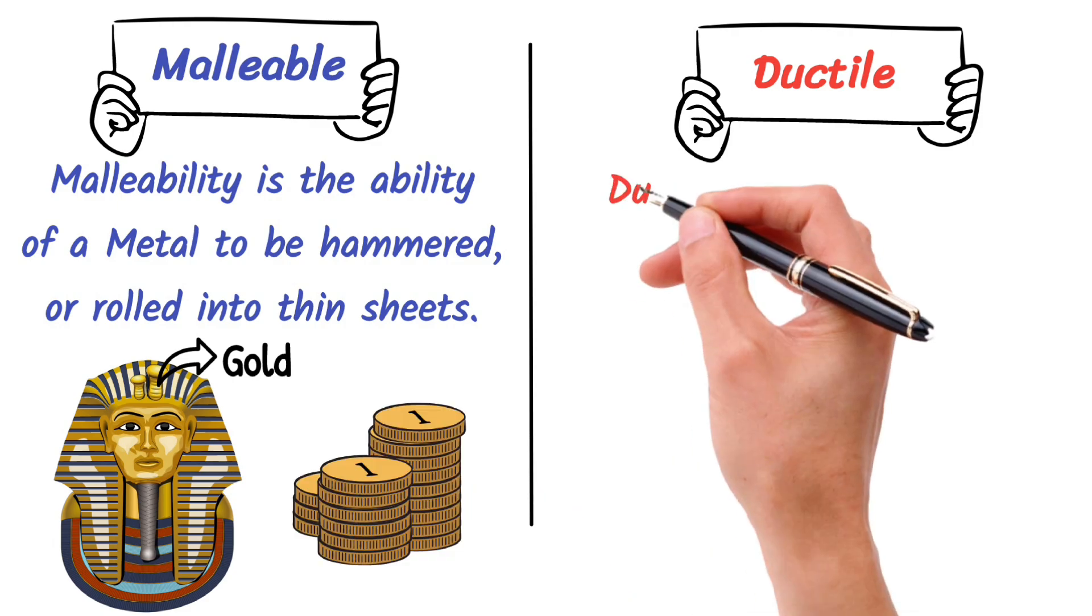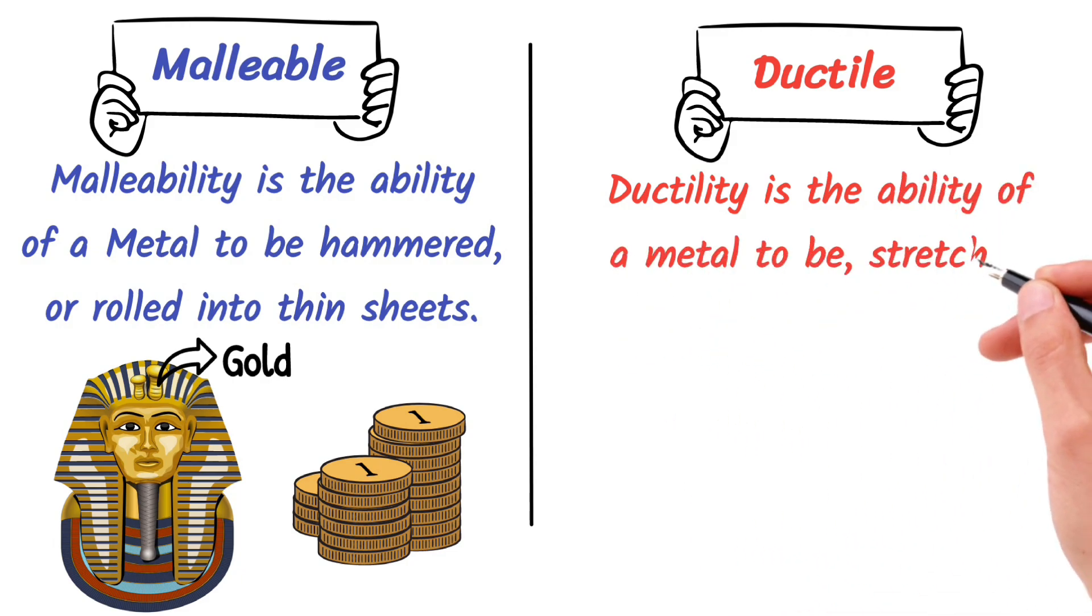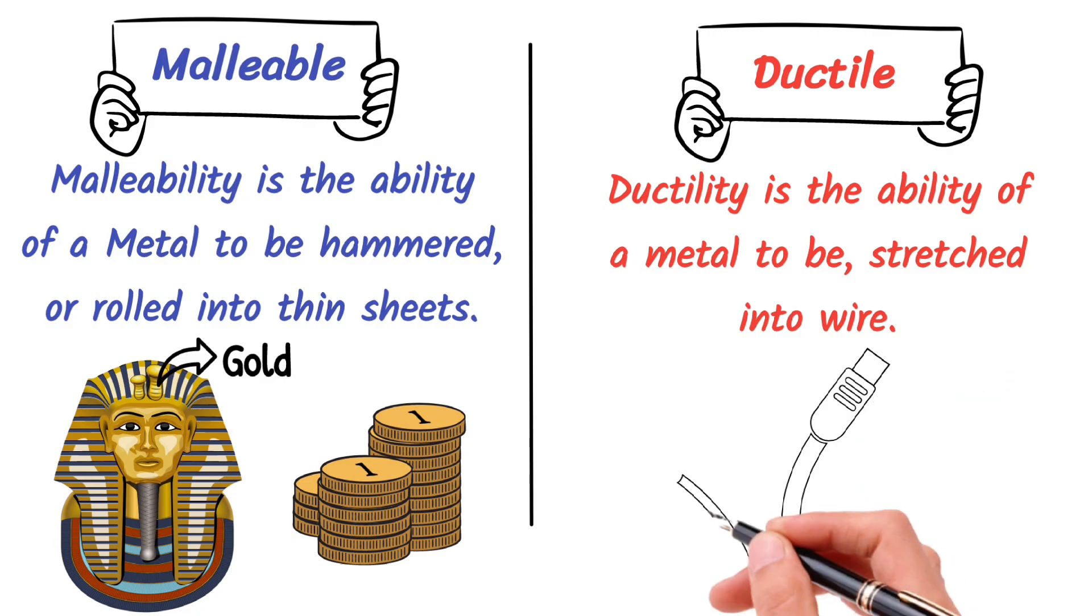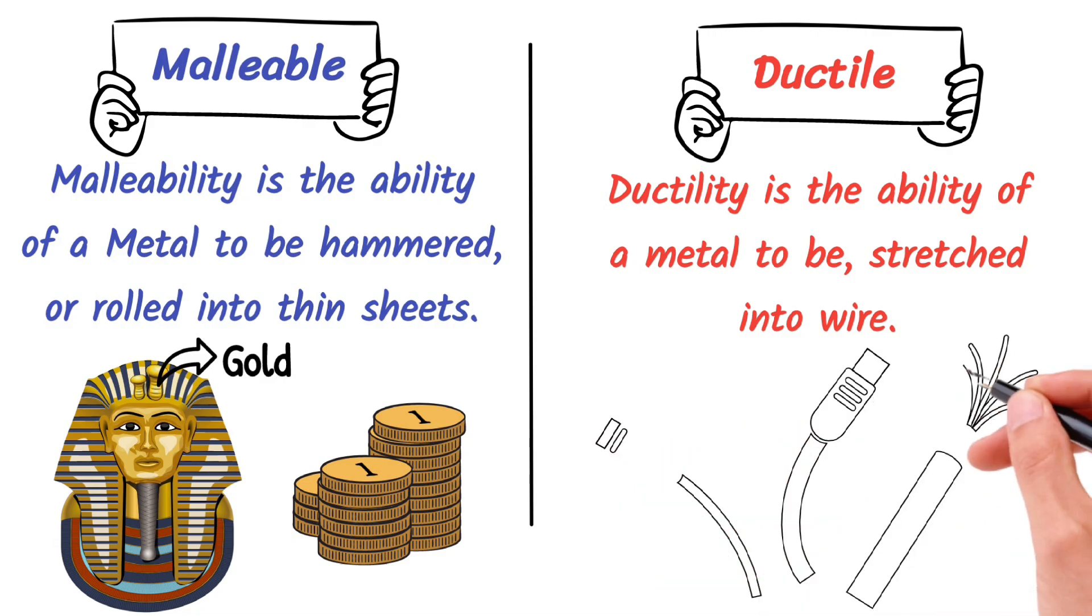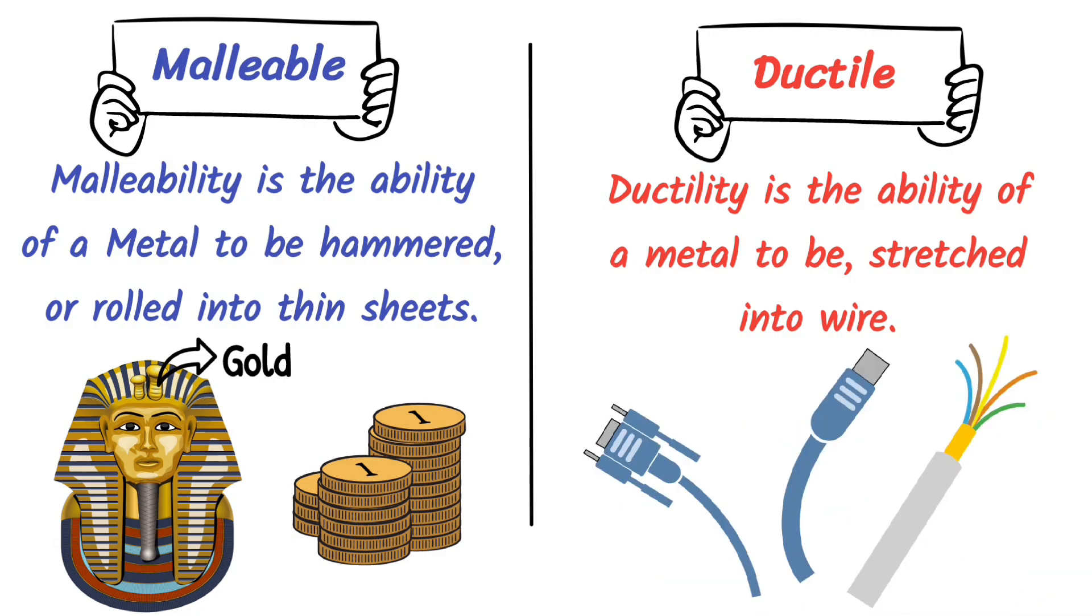On the other hand, ductility is the ability of a metal to be stretched into wire. Copper is a perfect example of a ductile metal. It can be easily drawn into thin wires which are used in electrical wiring.